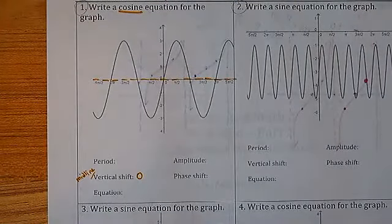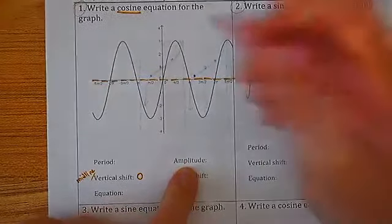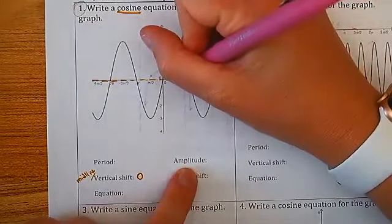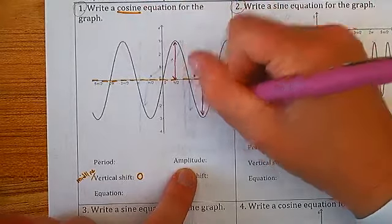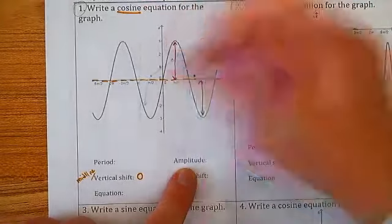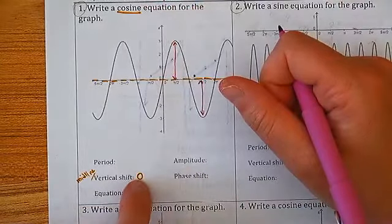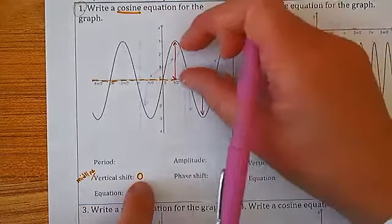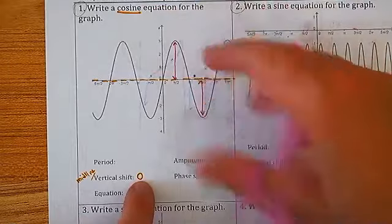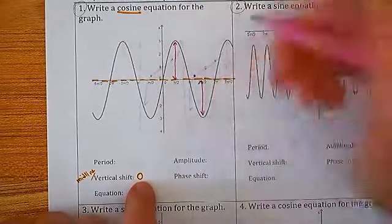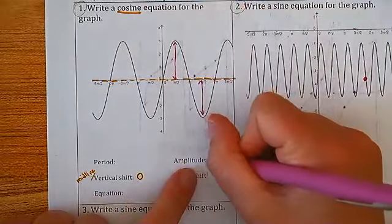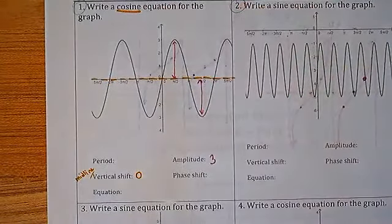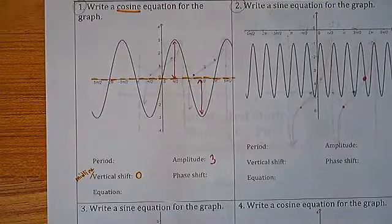Next I like to check the amplitude. That is the height from the midline to the peak, or from the midline to the valley — those should be equal, and it also tells you if you found the vertical shift correctly. If these aren't the same value, your midline is wrong. Here it's three units and three units, so my amplitude is 3.